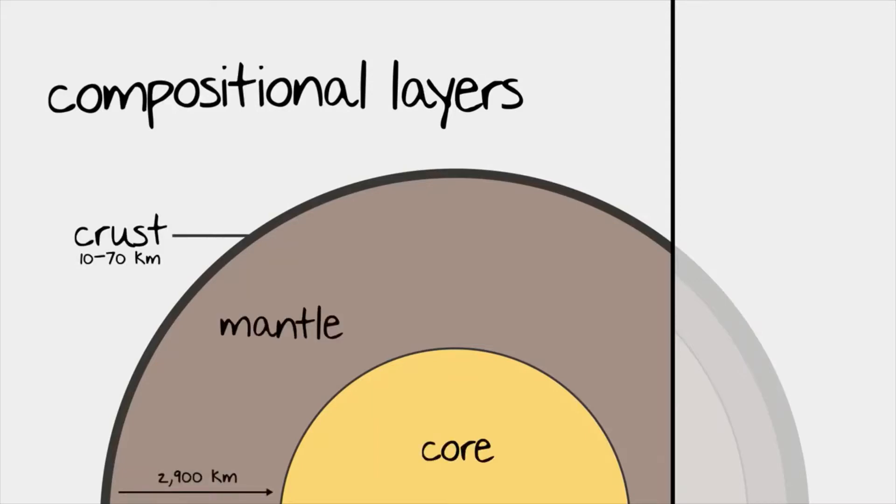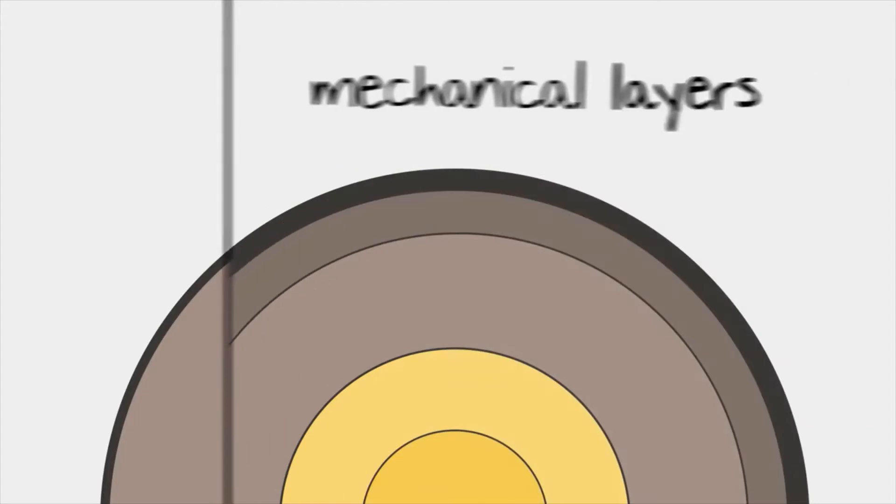It's important to understand that the compositional layers refer to the materials or elements the Earth is made of. However, if we take a look at how the inside of the Earth behaves, we can divide them even further into mechanical layers.